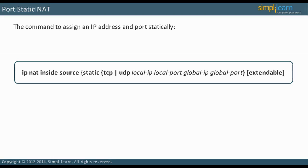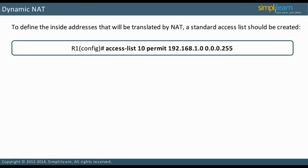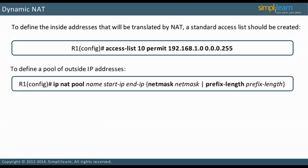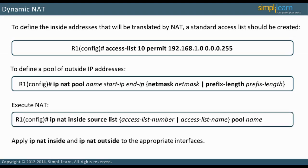There are several steps to configure dynamic NAT. First, use a standard access list to define the inside addresses that will be translated by NAT. Then configure a NAT pool of outside addresses — the pool must be part of the subnet specified on the interface that the 'ip nat outside' command is applied to; in other words, it is part of the public address space assigned by the ISP. Finally, apply 'ip nat inside' and 'ip nat outside' to the appropriate interfaces. Take some time to study the commands.